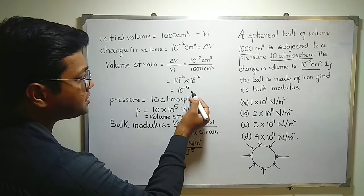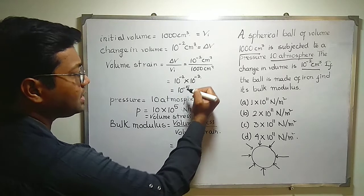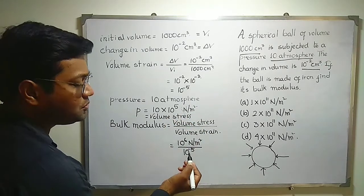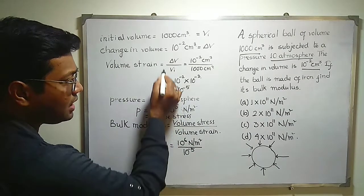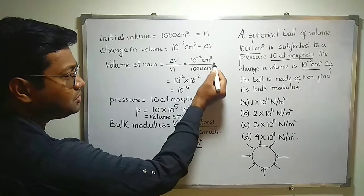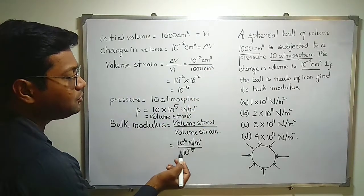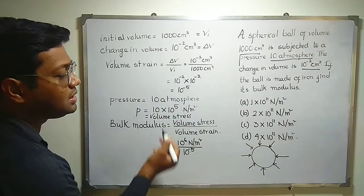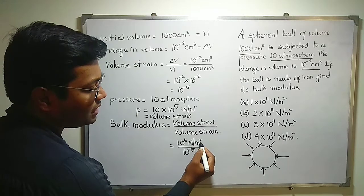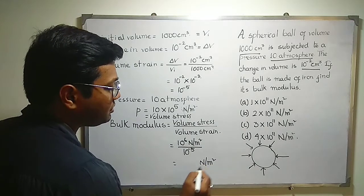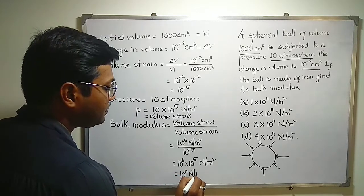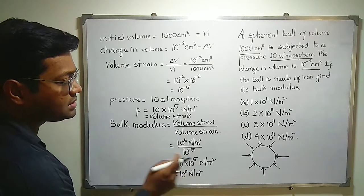It has no unit, no dimension. So both values taken in the same unit system — whether CGS or SI — give the same result since the units cancel out. There is no problem writing them directly. The unit of bulk modulus is therefore Newton per meter square. It is 10⁶ divided by 10⁻⁵, which gives 10 to the power 11 N/m². Bulk modulus has the same unit as volume stress.